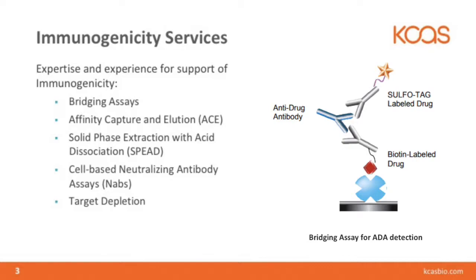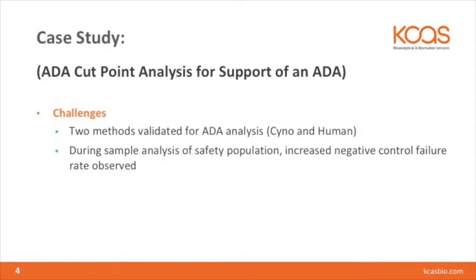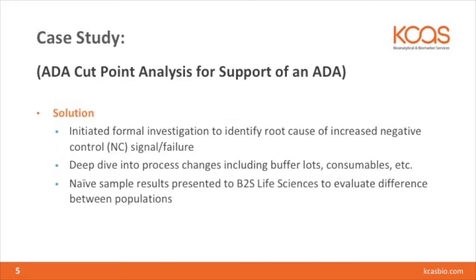I'd like to share with you a case study performed here at KCAS. This was in support of an antibody-drug conjugate. We had two methods that were validated for this ADA — in cynomolgus monkey and human matrix. During sample analysis of the human population, we observed an increased control failure. A formal investigation was started, and the root cause was identified as an issue with how we set the cut point during validation, which was using normal donors. When we then went to do sample analysis in a disease state, the investigation led us to screen a variety of baseline samples from the patients. This was evaluated and determined that, indeed, the naive samples and the disease state were different populations.